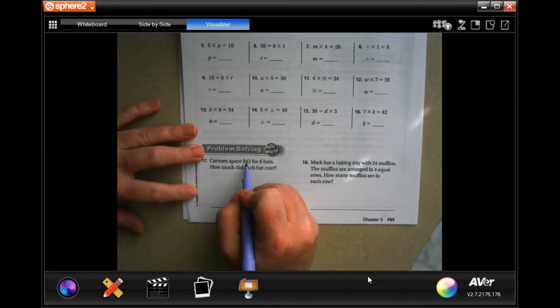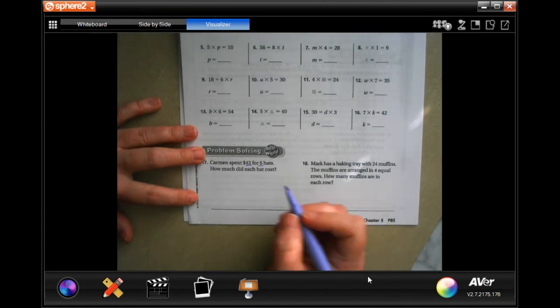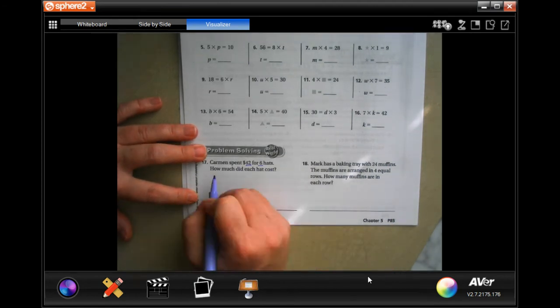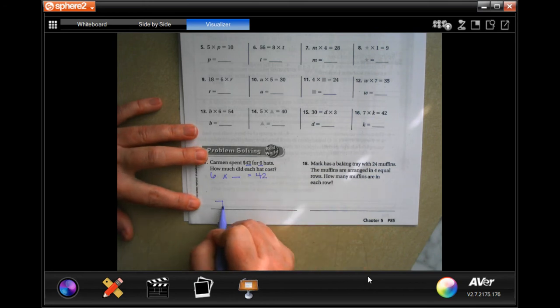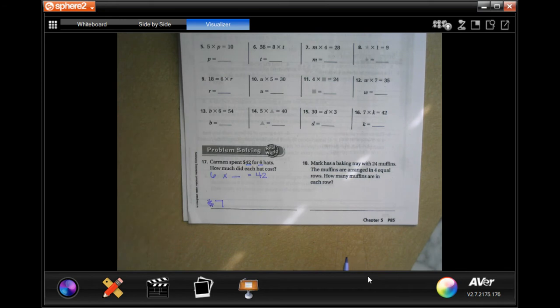Carmen spent $42 for six hats. How much did each hat cost? So, six hats times how much is $42? Well, six times seven is 42. Don't forget the dollar sign. That's your word answer.